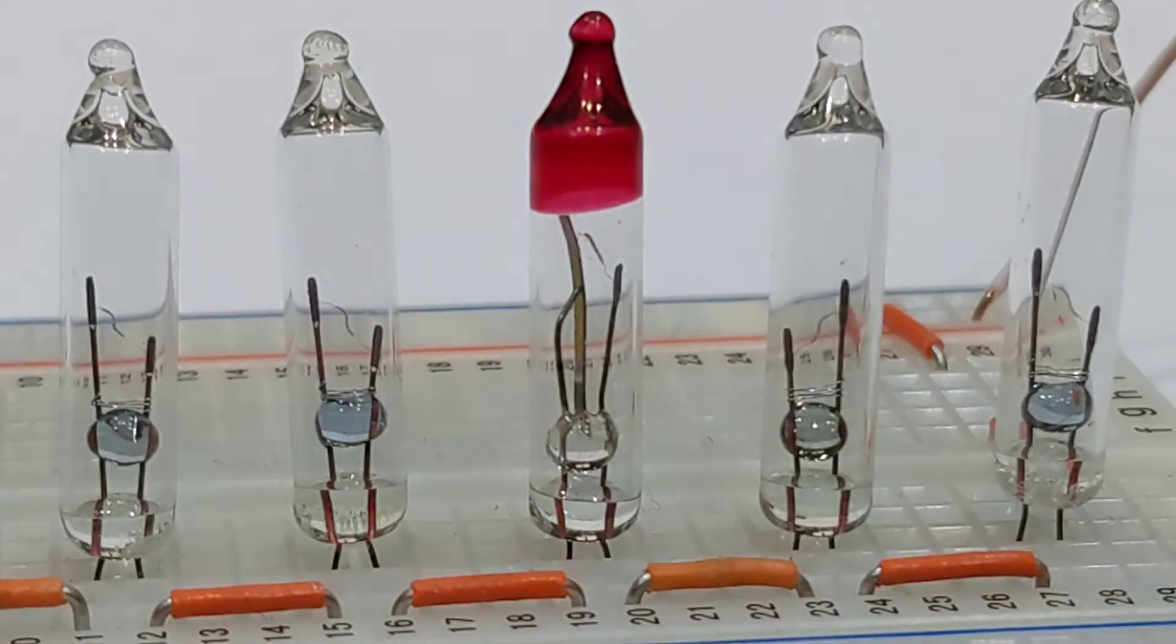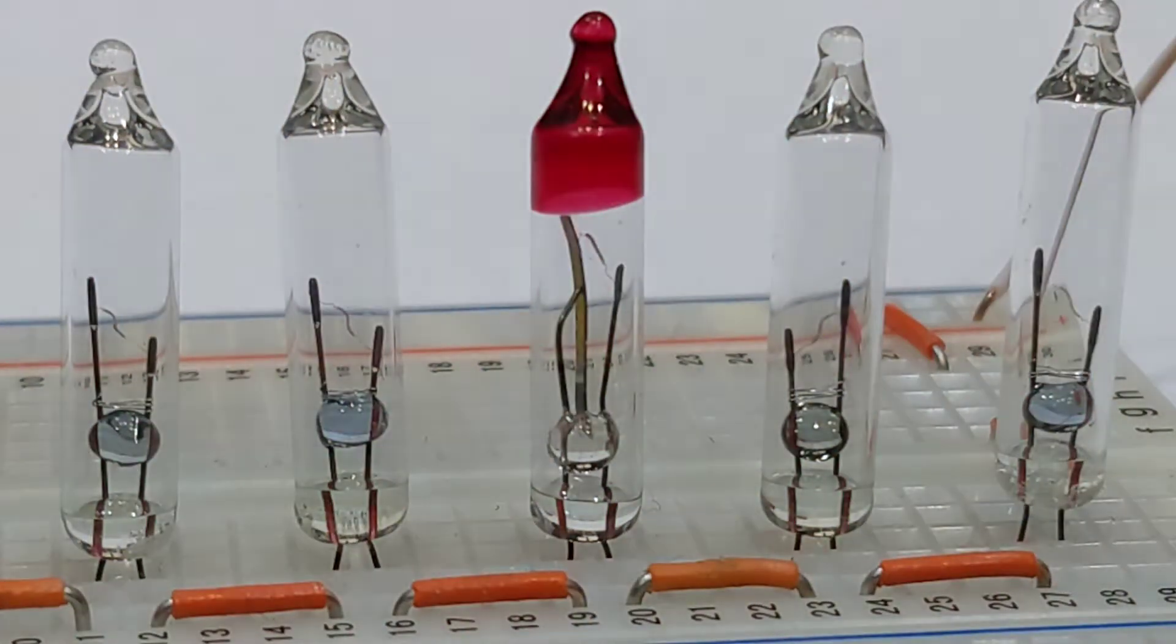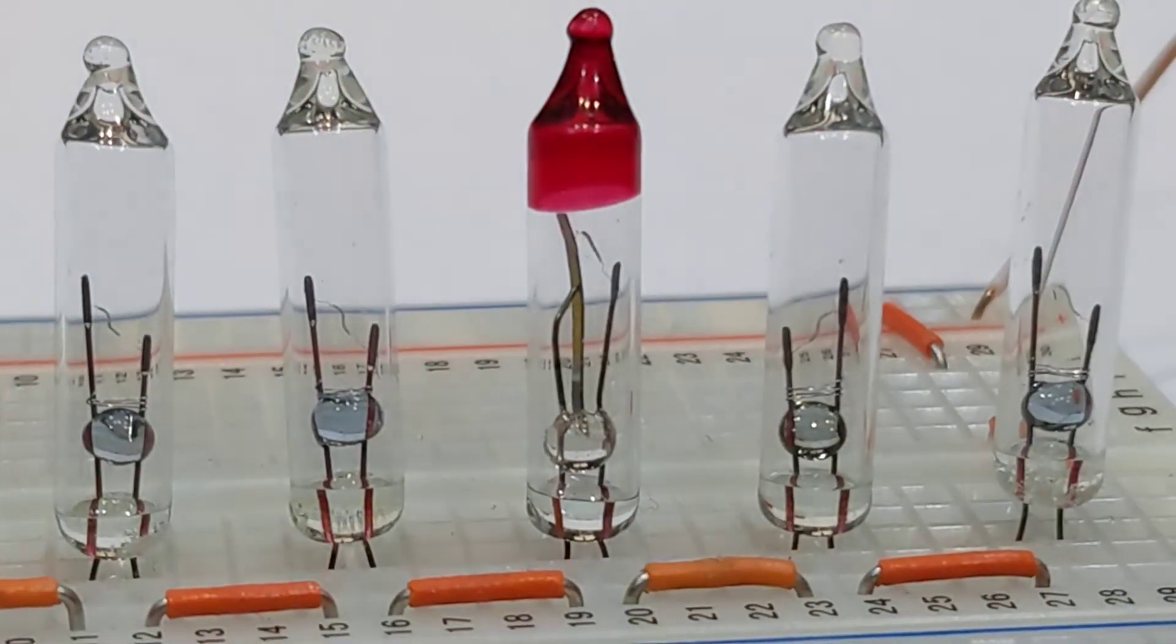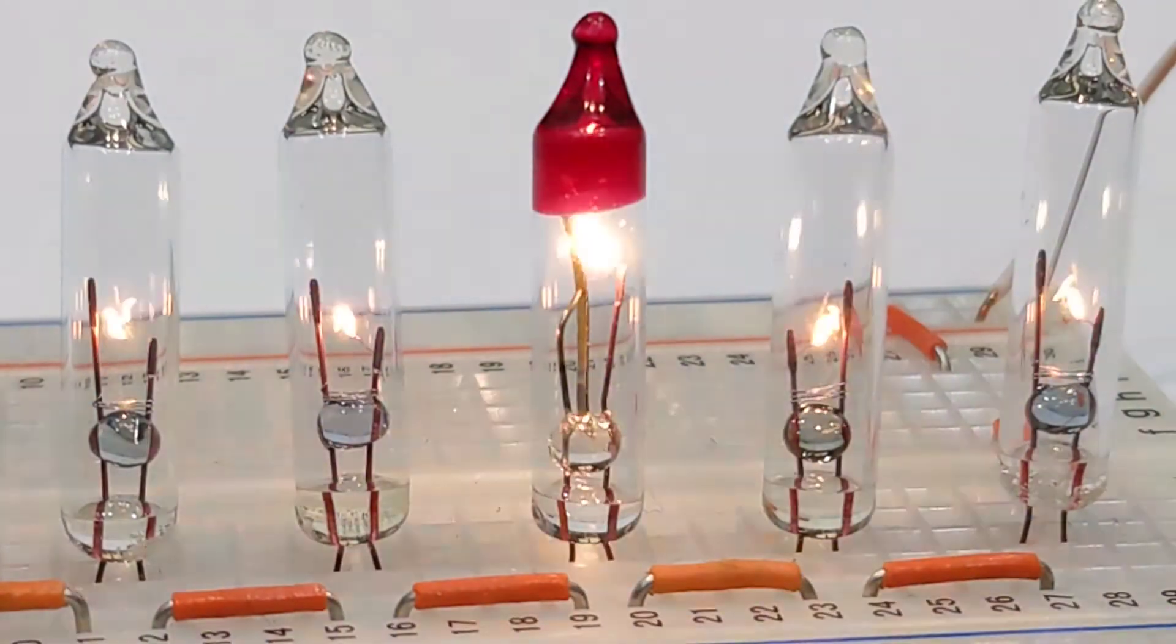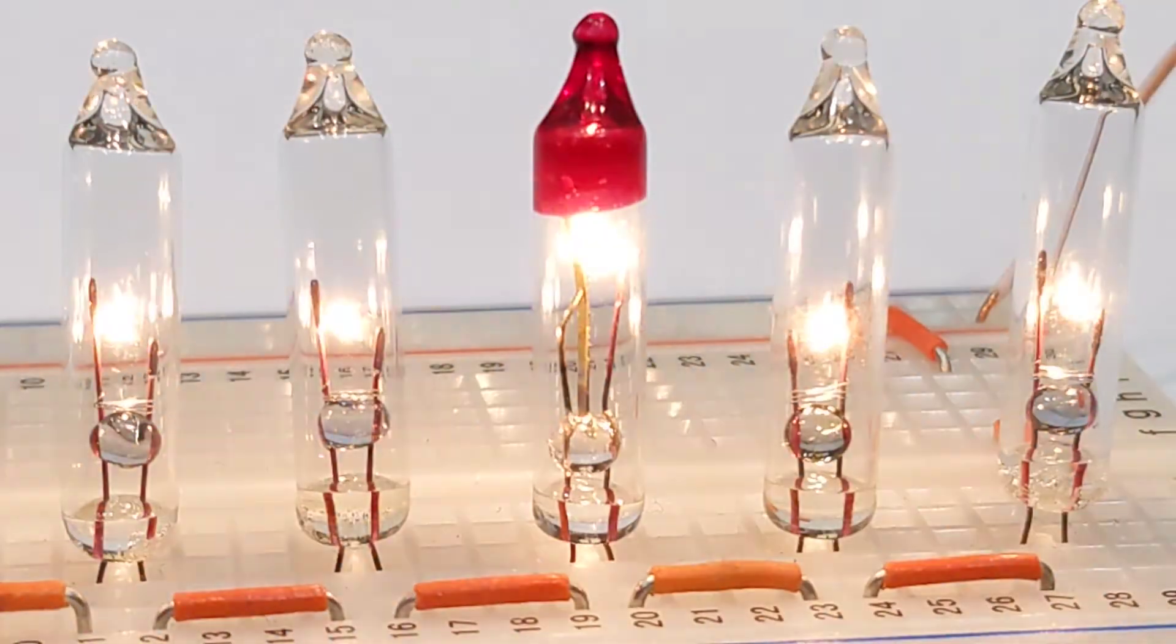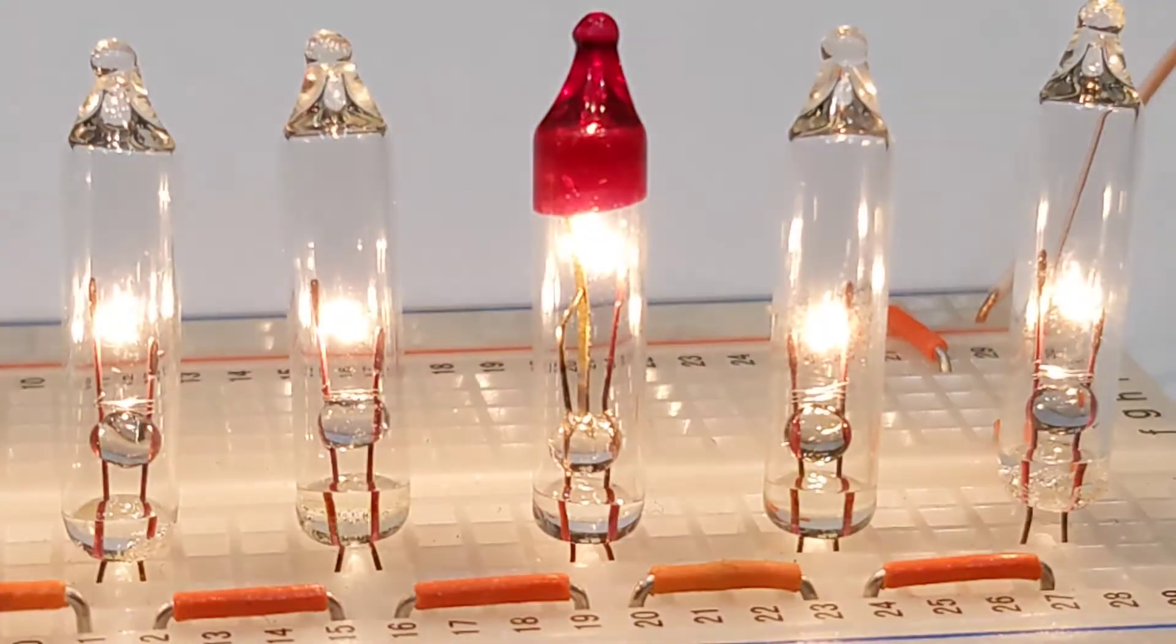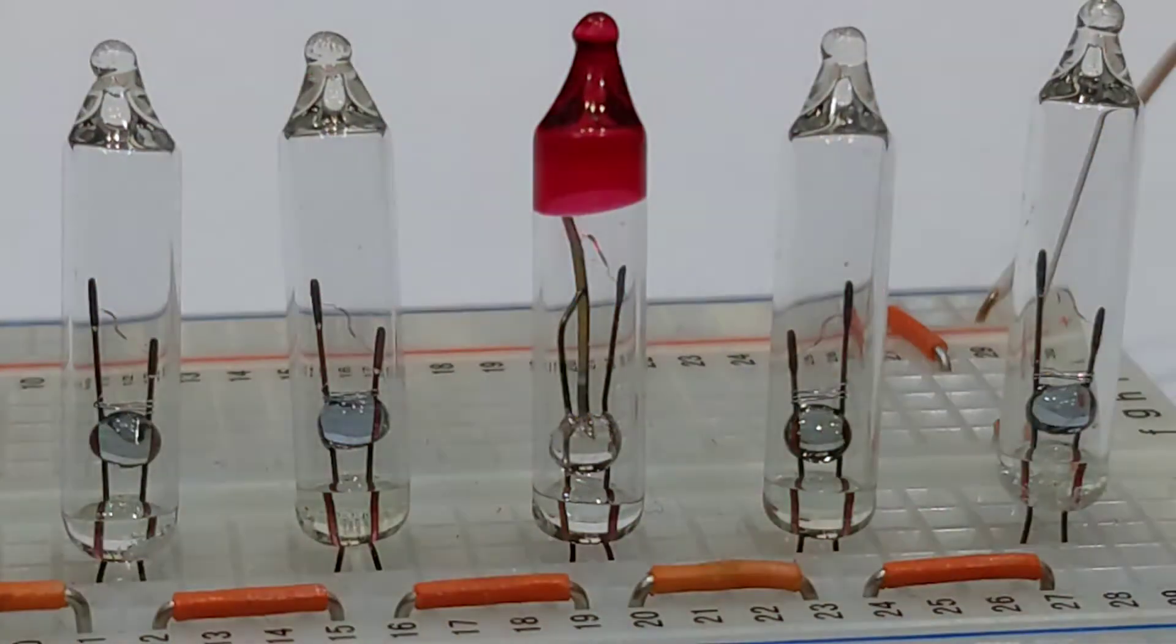If we zoom in you can see that red tip bulb has a different internal structure than the rest. You can see there's a third element, a large flat blade in the middle. That's called a bimetallic strip and it is the switch element.